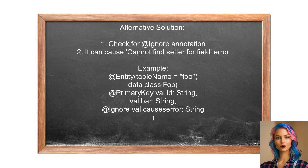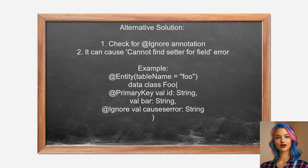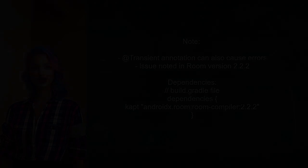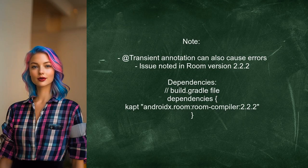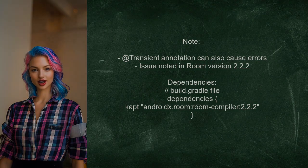Another user points out that the compilation error might be caused by using the @Ignore annotation on fields in your entity data class. If you have this annotation, it can lead to the 'cannot find setter for field' error for all fields. They also mention that using the @Transient annotation can lead to the same issue. This was observed while using Room version 2.2.2.